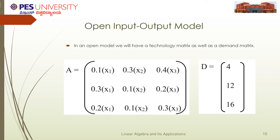Just like what we did for the closed model, in an open model we also convert the table into a technology matrix. Here, 0.1 holds the number of units that industry 1 uses of its own product in producing one more unit of industry 1, and we need to find out the value of x1. The same goes for x2 and x3, which eventually form the matrix x. In addition, we also have a demand matrix D, which we get from the additional sector having the final demand. We use these two matrices to find out the production level x.